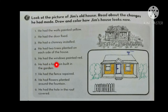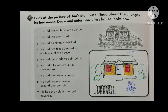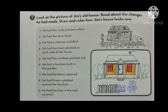Number five: he had the windows painted red — let's paint the windows red. He had the windows painted red. Number six: he had a fountain built in the garden. Fountain means نفورة (a water fountain). He had a fountain built — let's build a fountain. Number seven: he had the fence repaired. Look at the fence — it's damaged. Let's repair it. We completed the fence for James.